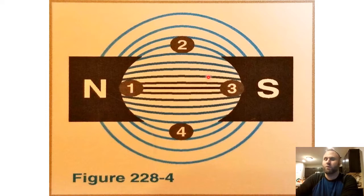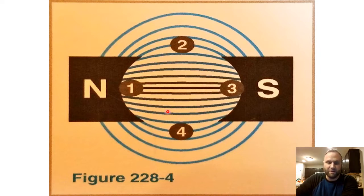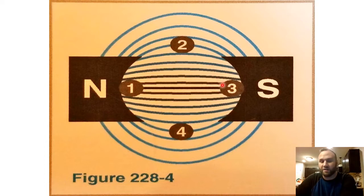Between points one and three, I have the most amount of torque. Between points two and four, I have the least amount of torque applied to the motor. As the loop rotates through these lines of flux, it gets more torque every time it passes points one and three. When it passes points two and four, it has almost zero torque impressed upon the loop itself and is running solely on its own momentum.